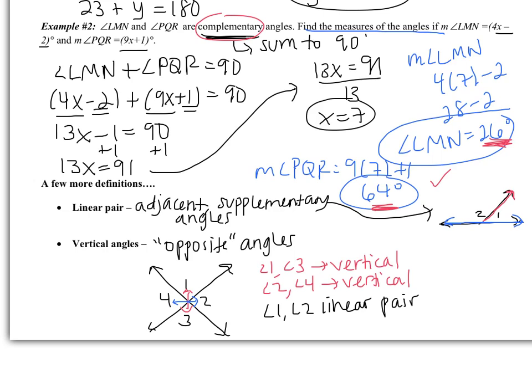One special note: vertical angles are always congruent — they always have the same measure. So if angle 1 were 90 degrees, angle 3 would also have to be 90 degrees. If angle 1 were 10 degrees, angle 3 would also have to be 10 degrees, because they are congruent. That was page 17 — now flip to page 18.